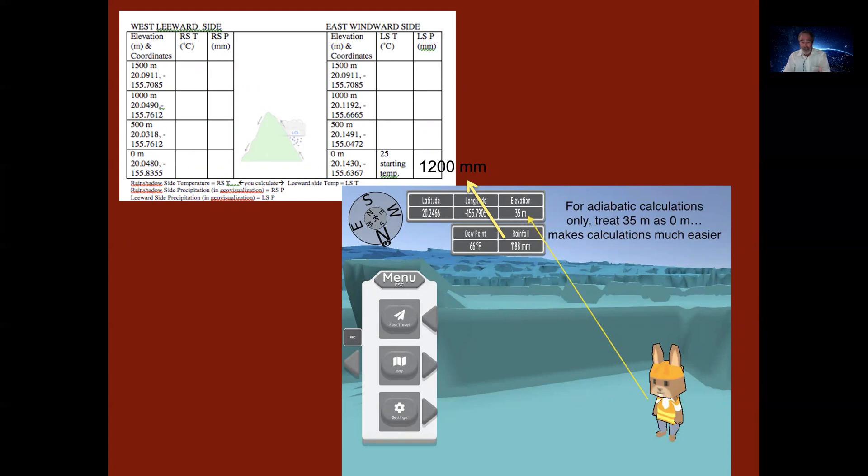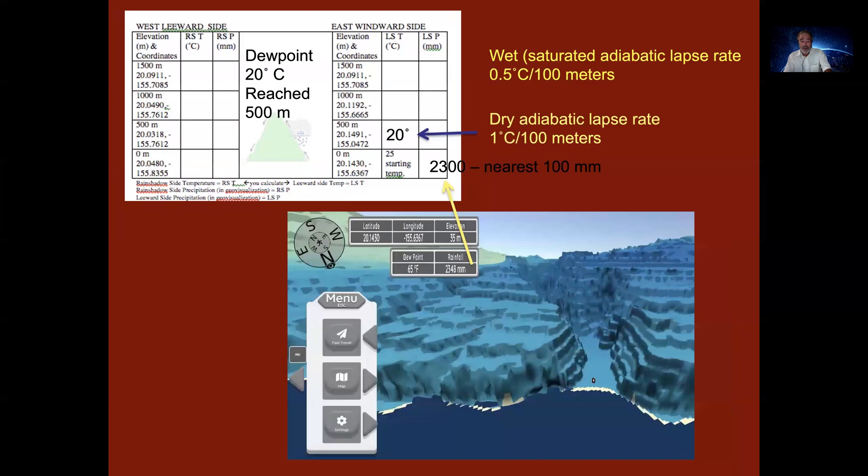So you're going to start at zero meters with a temperature of 25 degrees. That's given to you. We have to give you the starting temperature and you then are going to read the rainfall out to the closest hundred millimeters. So then you pop up in elevation to 500 meters. 500 meters, remember you're using the dry adiabatic lapse rate. So by going up 500 meters, the air is cool to 20 degrees C. And you can read that the rainfall is 2300. It's the closest to the 100. You round off to the nearest hundred millimeters.